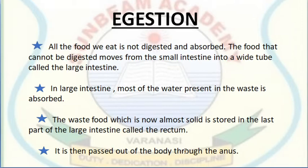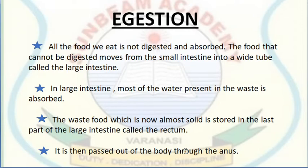Not all the food you eat is digested and absorbed. The food that cannot be digested moves from the small intestine into a wide tube called the large intestine. Here, most of the water present in the waste is absorbed. The waste food, which is now almost solid, is stored in the last part of the large intestine, which is called the rectum, and is then passed out of the body through the anus.